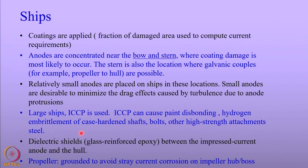It is also known that the propeller needs to be grounded; otherwise the current will stray from the propeller into the ship, leading to stray current corrosion occurring on the impeller hub bosses. So propellers need to be grounded in order to avoid stray current corrosion in the ships.